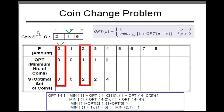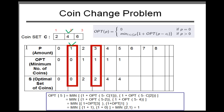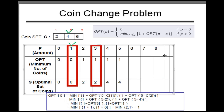For opt(5), we still can only use C_1 and C_2 — we can't use C_3 (six) yet because we haven't reached index six. So we compute 1 + opt(5 − 2) and 1 + opt(5 − 4), which is 1 + opt(3) and 1 + opt(1). opt(3) is one and opt(1) is zero, giving us two and one. The minimum is one, so opt(5) equals one.